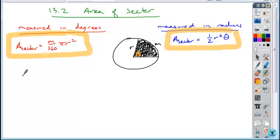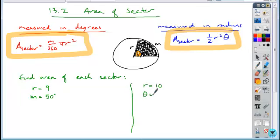Take a second and see if you can find the following. If you're given the same measures that we saw before - if the radius was 9 and the angle measure was 50, and also if the radius is 10 and the angle measure is 2 pi over 3.